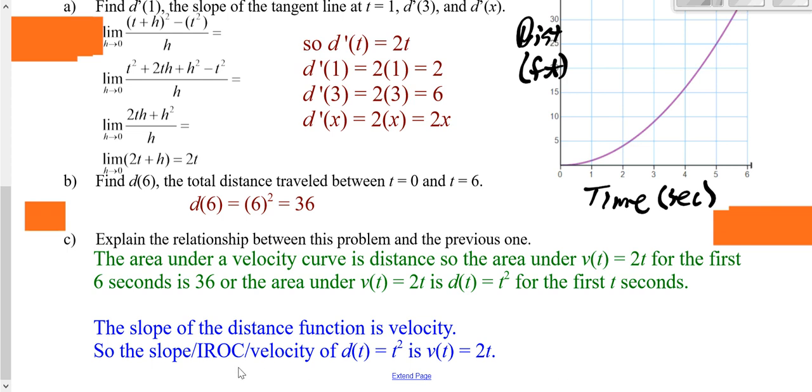So the IROC of your distance is velocity. And the units would support that. Because if we looked at our slope here, slope units is change in Y over change in X. Our Y units are feet. Our X units down here are like seconds, which is units for velocity.